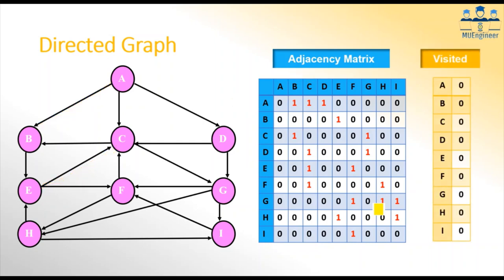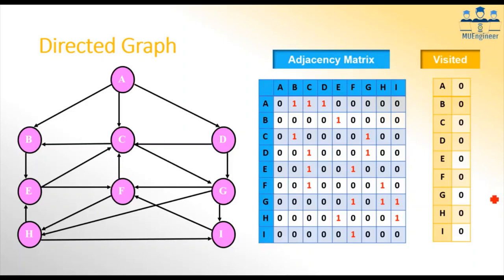Next we will also require a matrix called the visited matrix. Here we will be writing all the nodes. Suppose I have nine nodes, so I will have a single-dimensional array of locations zero to nine. Initially I keep all the values as zero. So this is all about the matrices.